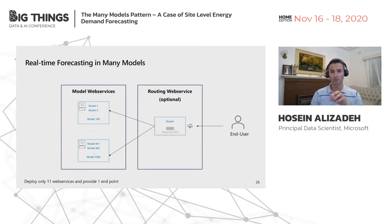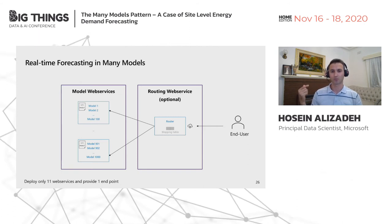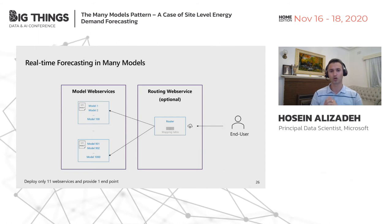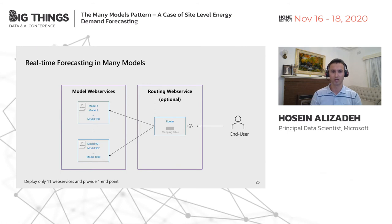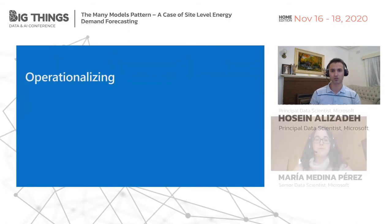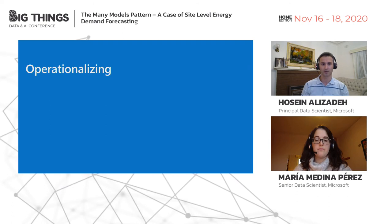This router knows where each model is deployed. Because it is itself a web service, it also has an API — and we provide that single API to the end user. The end user provides data and calls this one endpoint. The routing web service's job is only to call the appropriate web service that has the relevant model, get the results back, and return them to the end user. With this approach, you deploy only 11 web services and provide just one endpoint — the best case for the end user. This is the same approach we leveraged for our use case.